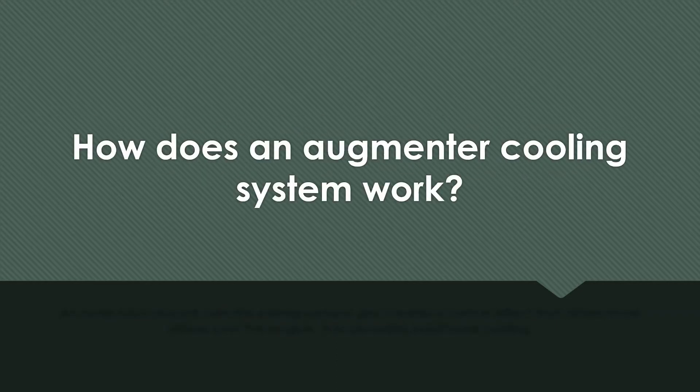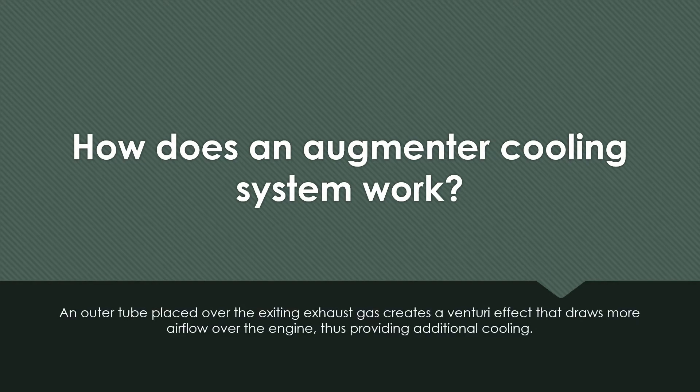How does an augmenter cooling system work? An outer tube is placed over the exiting exhaust gas, which creates a venturi effect that draws more air flow over the engine, thus providing additional cooling.